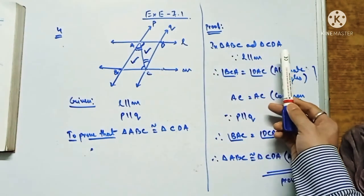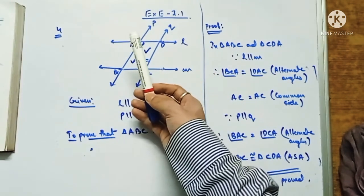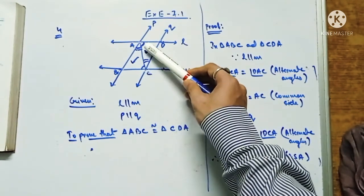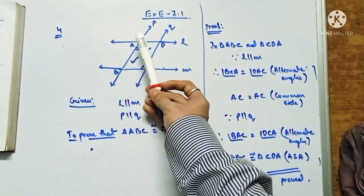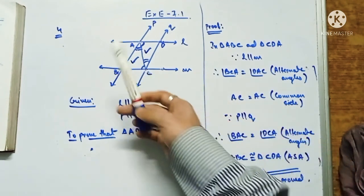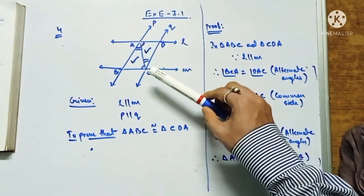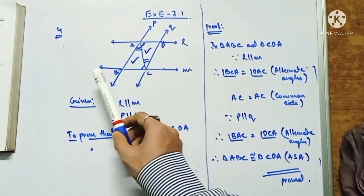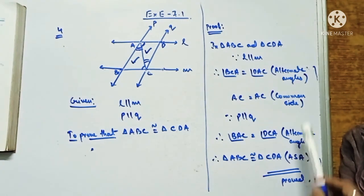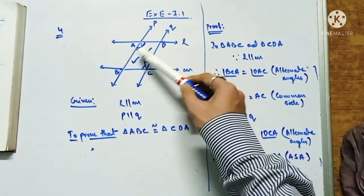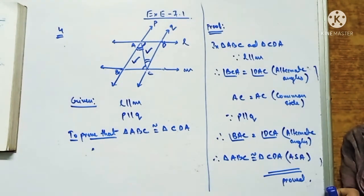In triangle ABC and triangle CDA: since L is parallel to M and AC is the transversal, angle BCA equals angle DAC — alternate angles. AC equals AC — common side. Since P is parallel to Q and AC is the transversal, angle BAC equals angle DCA — alternate angles. Therefore triangle ABC is congruent to triangle CDA by ASA. Hence proved.